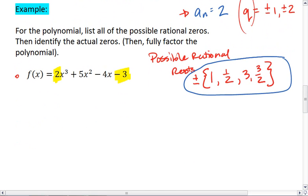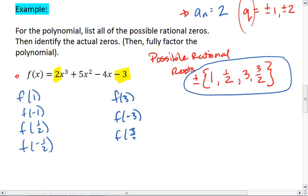Now, to check if these are actual roots, we want to plug them into our function. We're going to plug in 1, negative 1, 1/2, negative 1/2, 3, negative 3, 3/2, and negative 3/2.